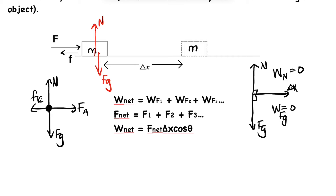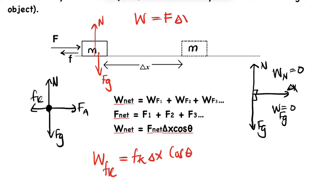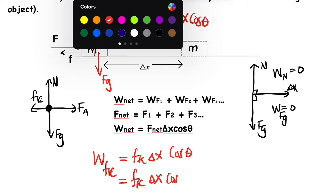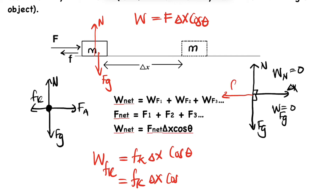Let's calculate the work done by the frictional force. The work done by friction equals the frictional force times the displacement times cos theta. This comes from the definition: work equals force times displacement times cos theta. The frictional force acts parallel but in the opposite direction to the displacement, so the angle between them is 180 degrees.